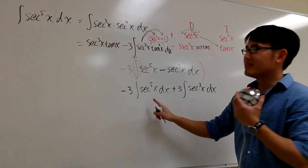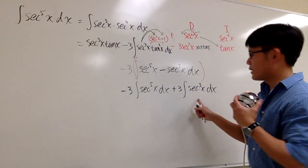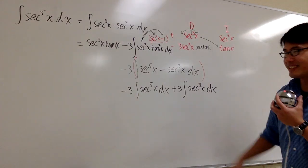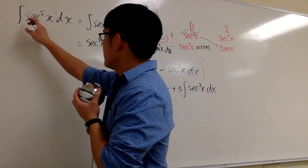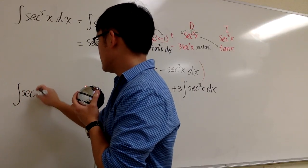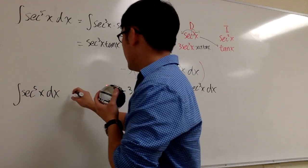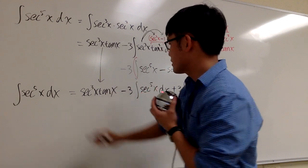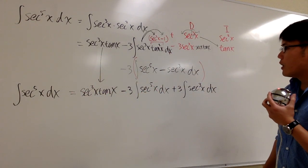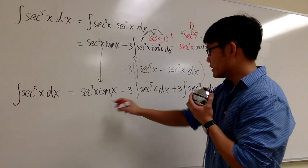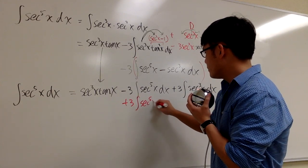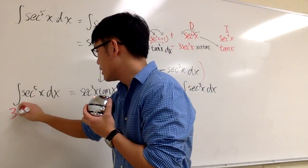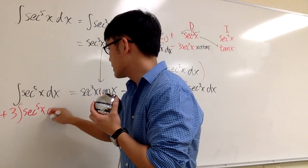Notice this integral of secant to the fifth power x is a repeat of the original. The integral of secant to the third power x has a separate video. So let's write out: the integral of secant to the fifth power x dx equals secant to the third power x times tangent x, minus 3 times the integral of secant to the fifth power x dx, plus 3 times the integral of secant to the third power x dx. Adding 3 times the integral of secant to the fifth power x dx to both sides gives us 4 times the integral on the left.